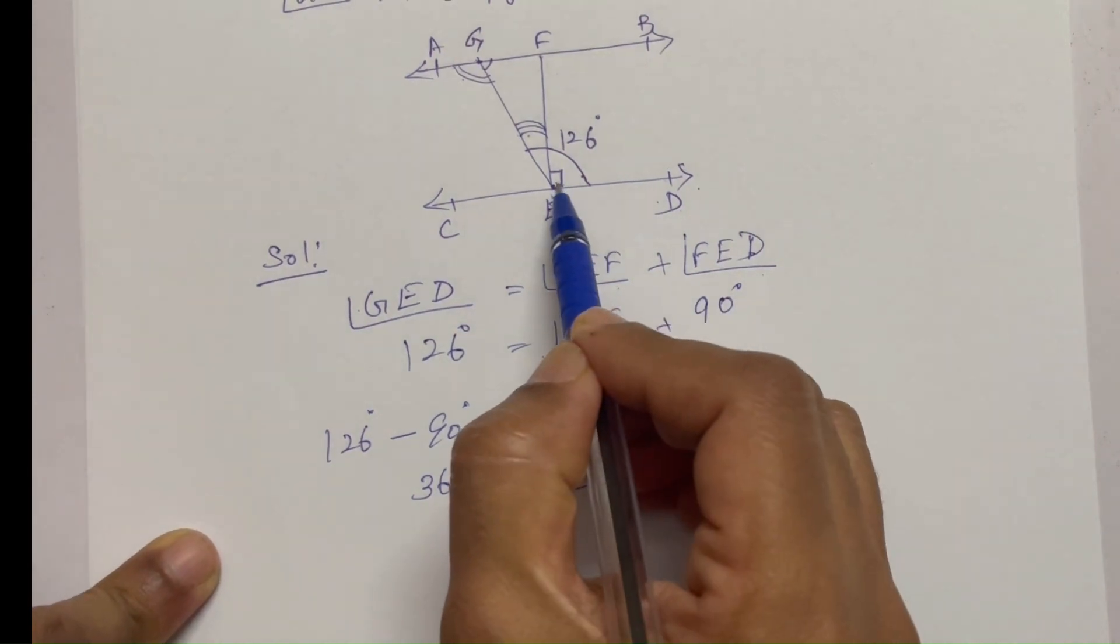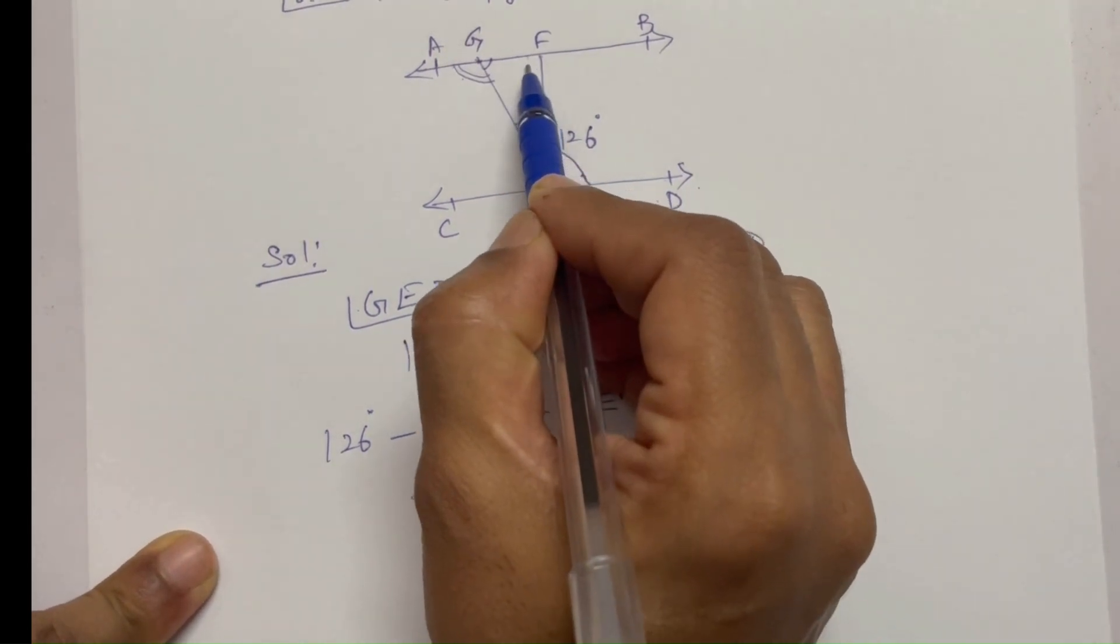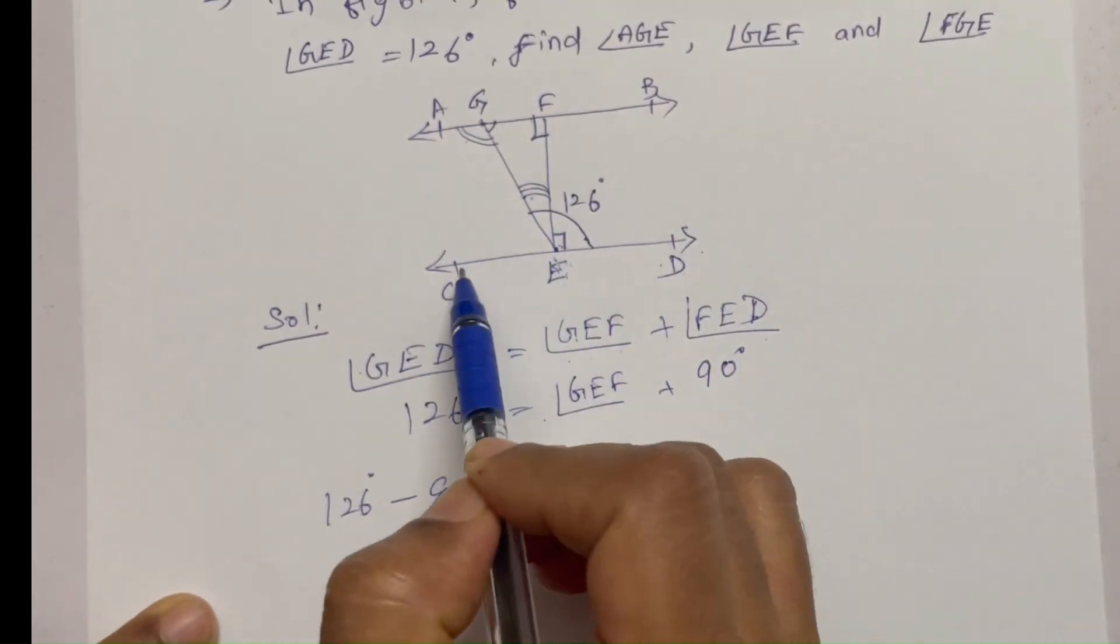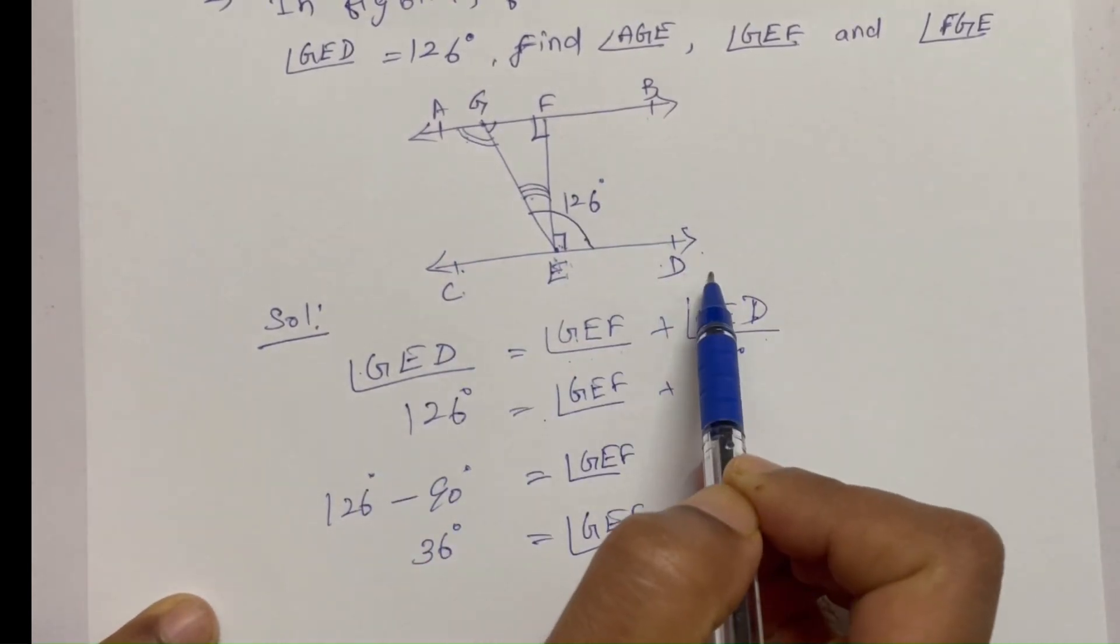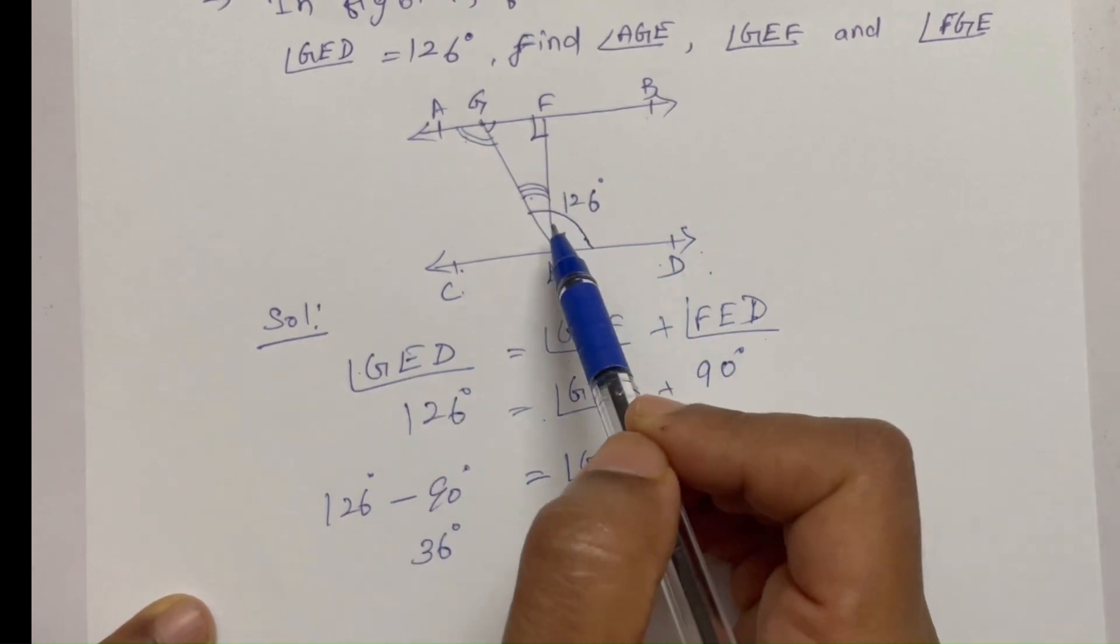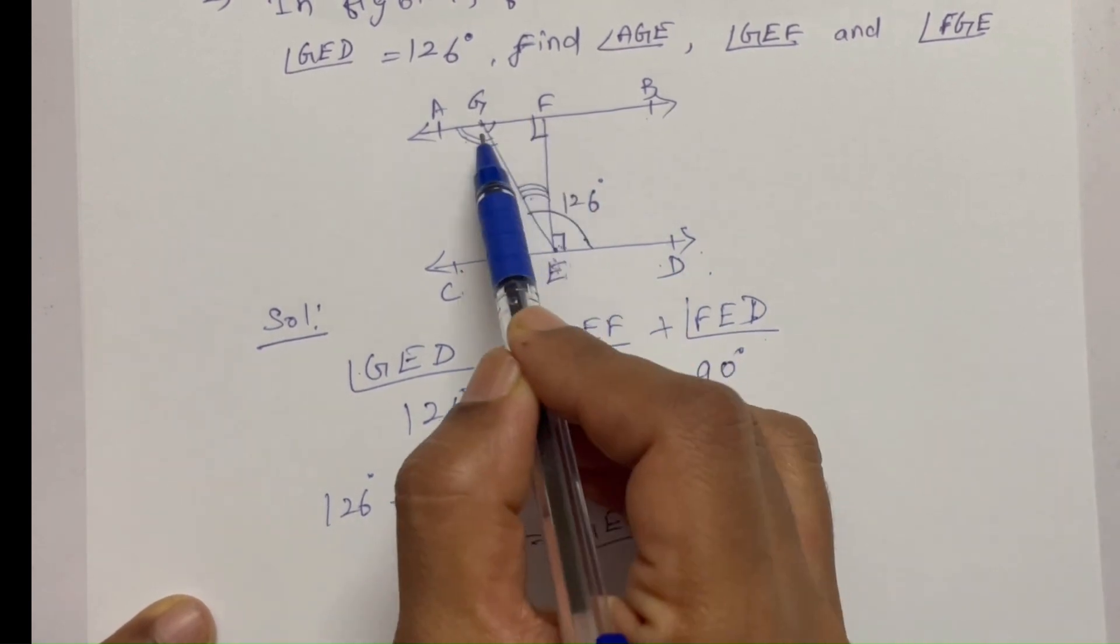This angle is 90 degrees. Because AB parallel to CD, this angle is 90 degrees. You can see here.